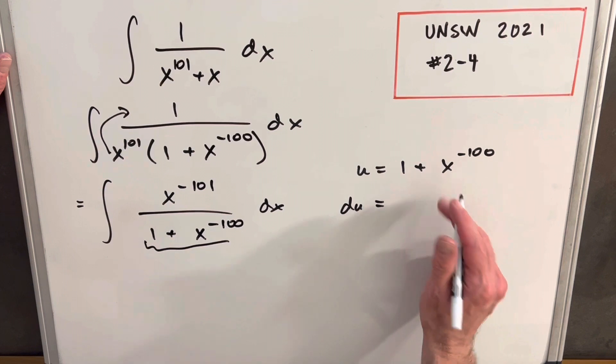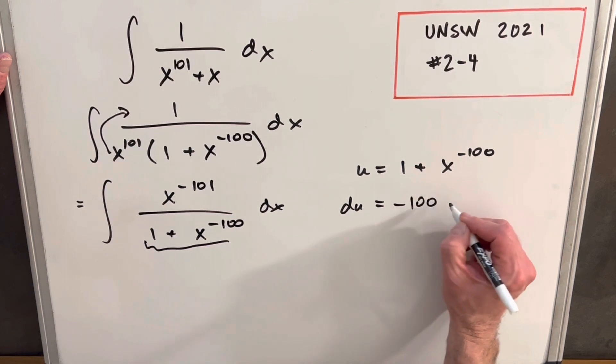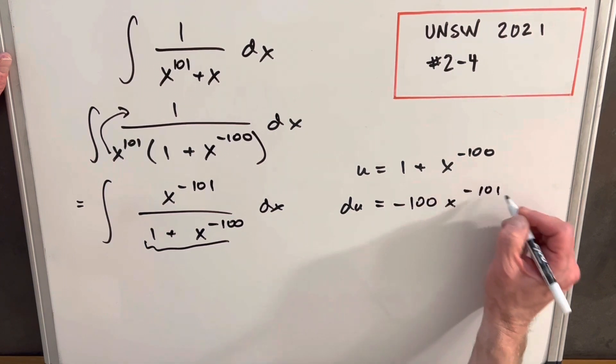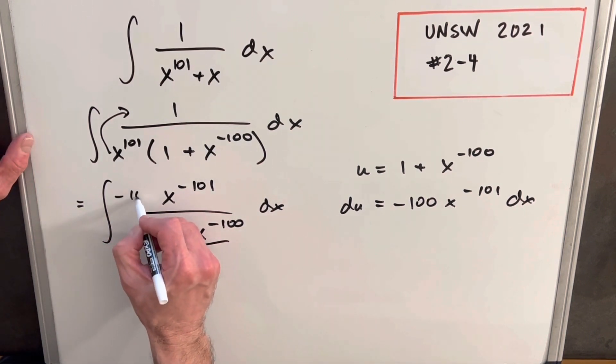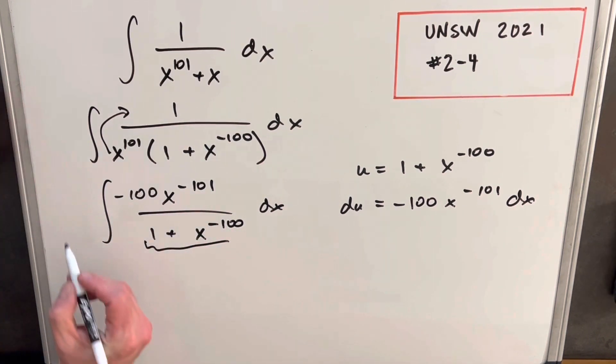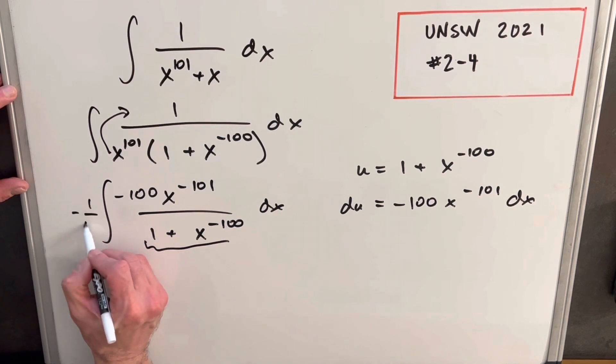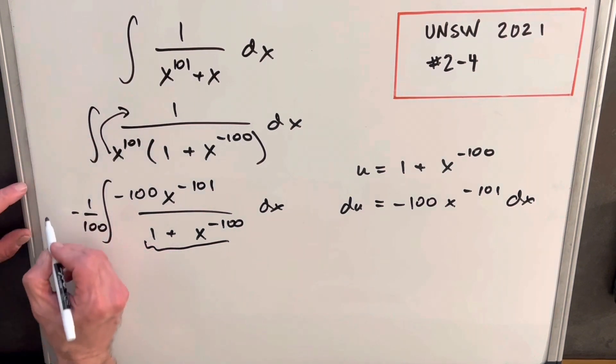Derivative of one is zero, derivative of this is going to be minus 100 x to the minus 101 dx. And that's pretty good because our numerator is really similar to what we have here for our du value. What I can do is just create a minus 100 right here. But then so we don't change that, we'll have a minus 100. Then notice all we've done in here is multiplied by one.